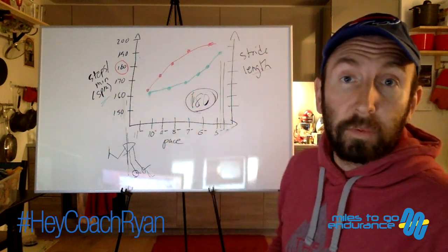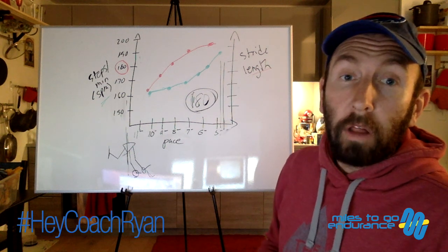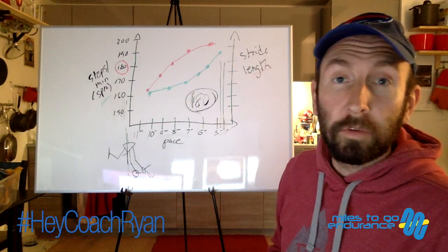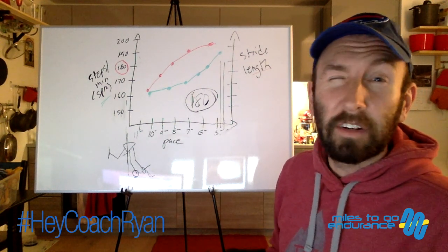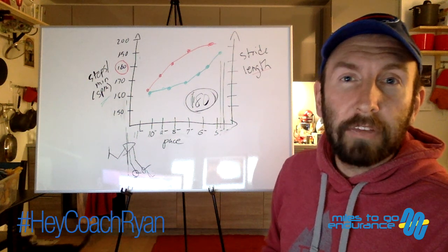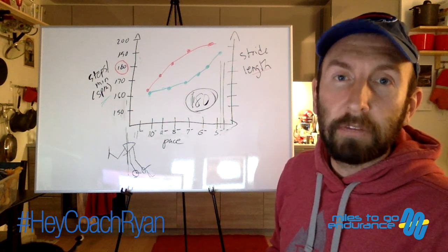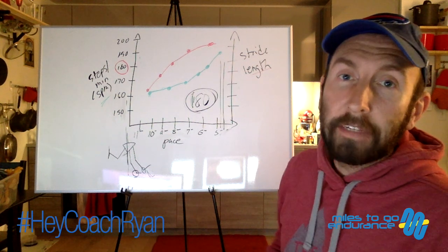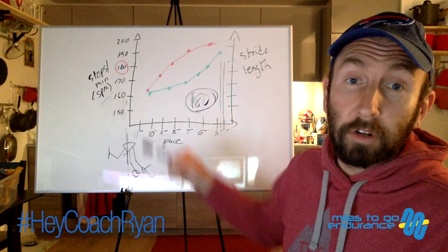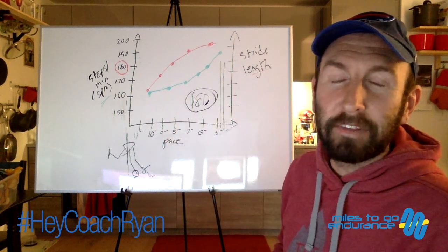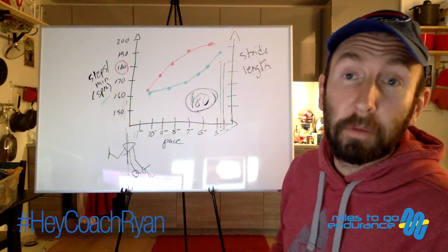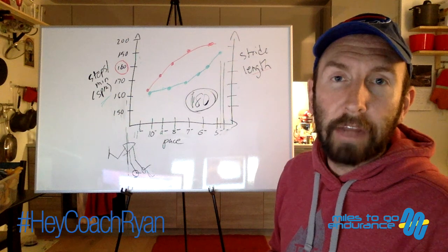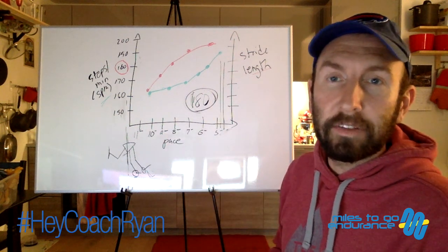Now, why does this matter? Why do we care about this? Well, in 1984, Dr. Jack Daniels went to the Olympics and studied, I believe it was the 1500. He studied a group of 46 elite runners and looked at what their cadence was during their event. Daniels found that only one of those runners was below 180 steps per minute. So he surmised that this number is really important, and that your running cadence should be about 180 steps per minute.